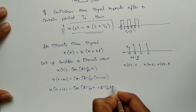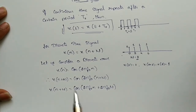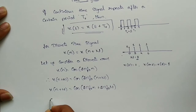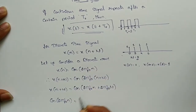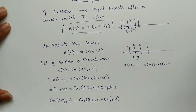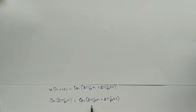Expanding: x[n + N] = cos(2πf₀n + 2πf₀N). For x[n] = x[n + N] to hold, we need cos(2πf₀n) = cos(2πf₀n + 2πf₀N). This equation holds only if the term 2πf₀N is an integer multiple of 2π.